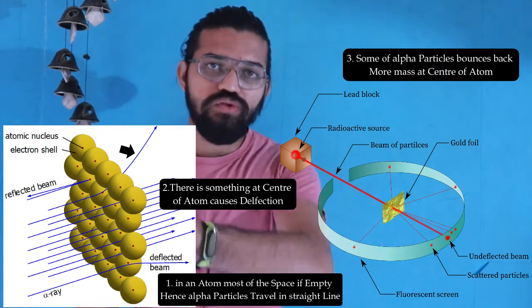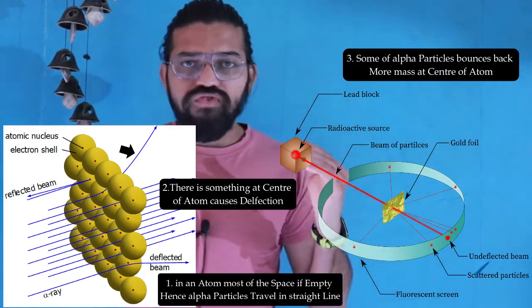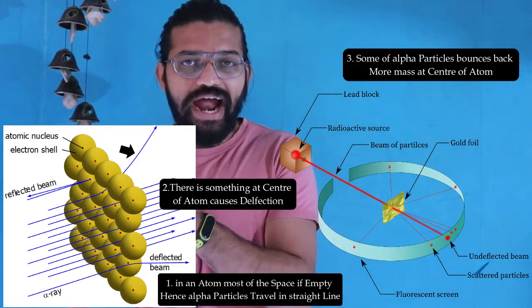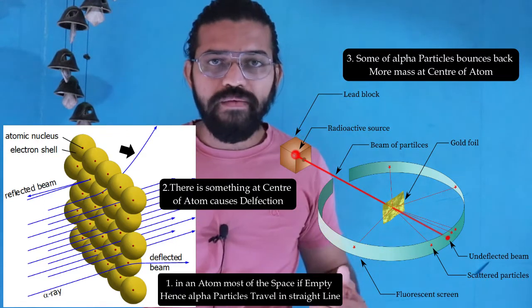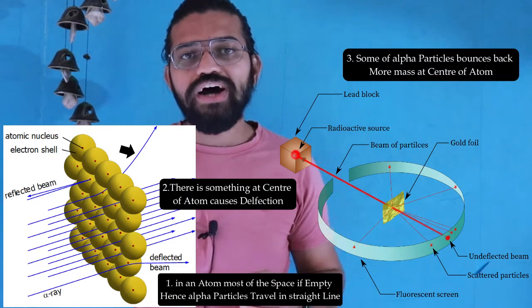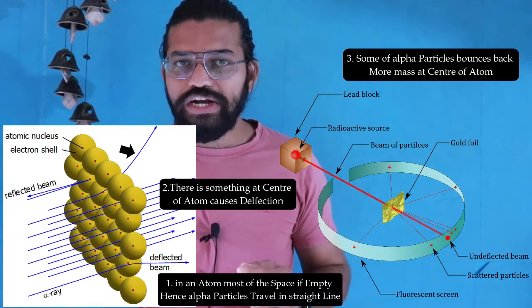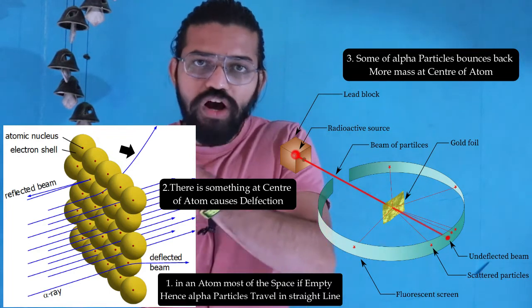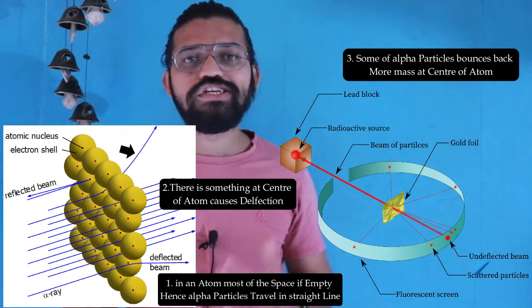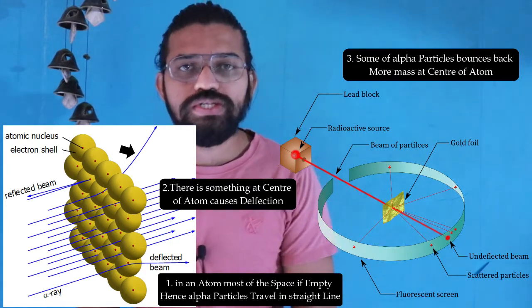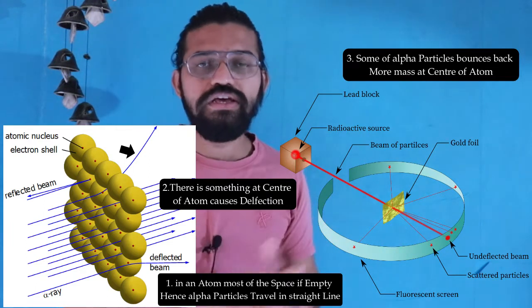In his third observation, some alpha particles bounced back, meaning those particles directly hit something at the center of the atom. This implies that the mass of the particle at the center of the atom is greater than that of the alpha particles — which is why they bounce back. These are the three key observations he made.